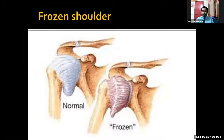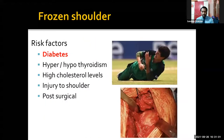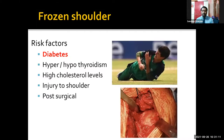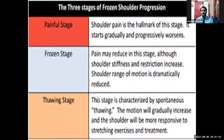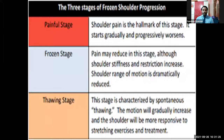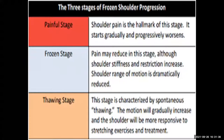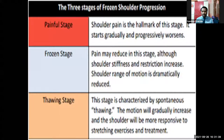Next is frozen shoulder. As stated, this is not a diagnosis per se — it is a stiff shoulder. Risk factors include diabetes, hyper and hypothyroidism, high cholesterol levels, injuries, post-immobilization, or post-surgical. There are three stages: the painful stage, the frozen stage, and the thawing stage. We generally do not see patients in the painful stage because there is a good range of movements with only pain. This progresses to the frozen stage with restriction of movements. Most of our frozen shoulder patients are in the frozen stage.